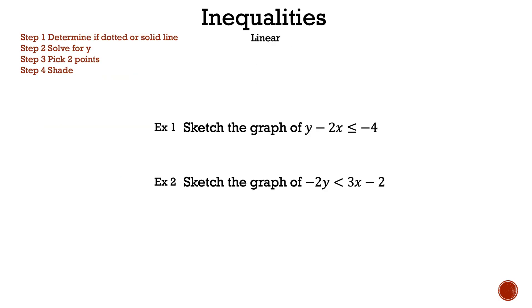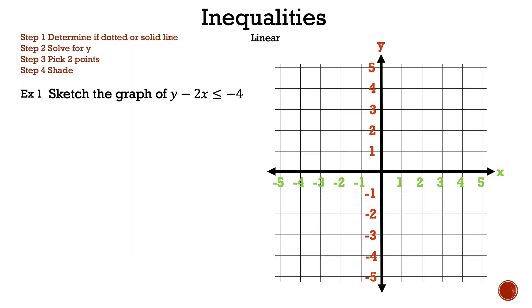Now let's take a look at the examples we're going to discuss in today's video. Let's take a closer look at example one. Let's read the steps. Step one: determine if dotted or solid line. Step two: solve for y. Step three: pick two points. Step four: shade. Now let's read the question. Sketch the graph of y minus 2x less than or equal to negative four.